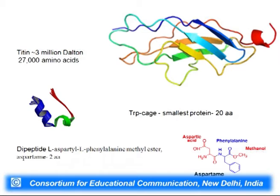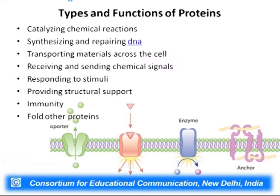Functionality does not depend on the number of amino acids alone. A small dipeptide commonly known as aspartame — L-aspartyl L-phenylalanine methyl ester — is an artificial sweetener. It is a dipeptide and a functional molecule, but it would not be called a protein. So we can say there are several types and functions of proteins.